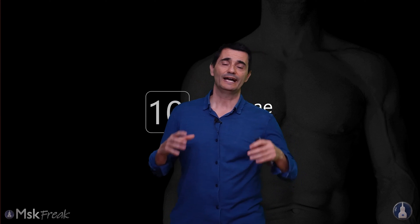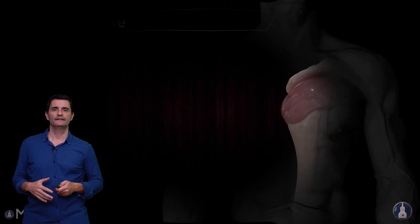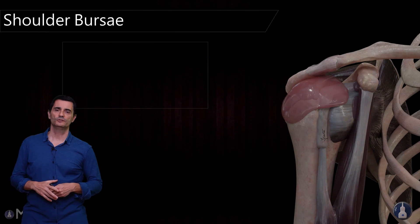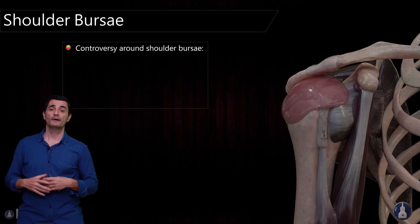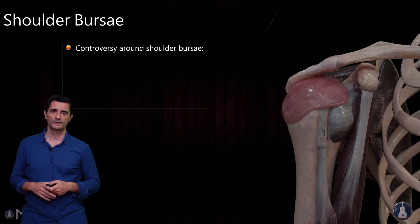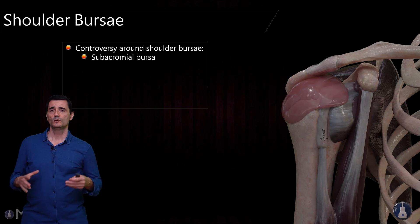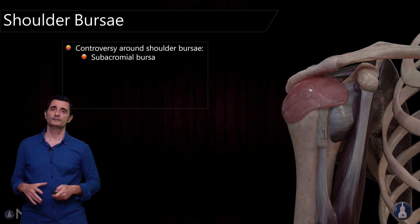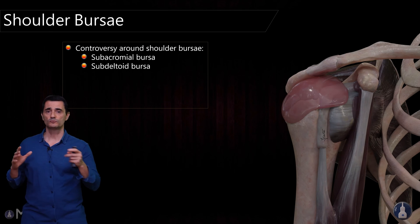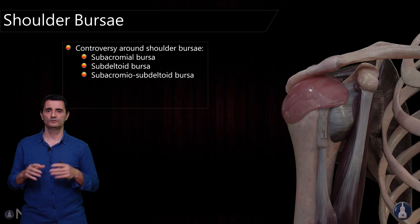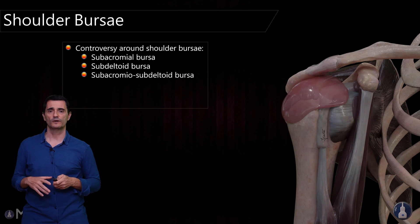Now we are going to take a look at the anatomy of the bursa. This is quite difficult to understand because there are several variations and there is controversy about the names of the bursa, the amount of bursae in the shoulder, and the extent of these bursae. Because of these anatomical variations there is a lot of controversy. We will talk about the subacromial bursa, subdeltoid bursa, and the subacromial-subdeltoid bursa, which is the fusion between the former and the second one.